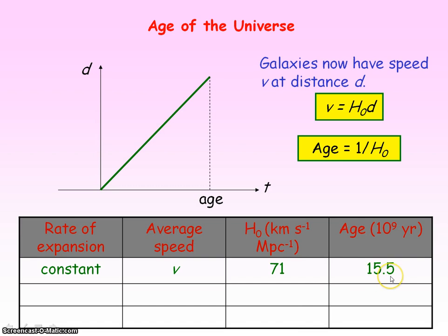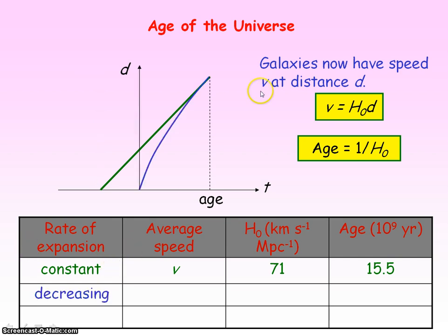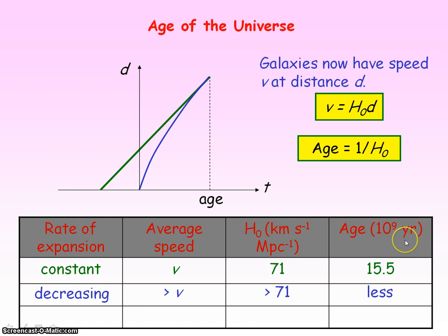It's important to note that this age of the universe is an approximation, because we've assumed a constant rate of expansion. However, if the rate of expansion is decreasing — so the galaxies are decelerating to their current speed V at distance D — then their average speed will have been greater than V. The effective Hubble's constant would therefore be greater, and the calculated age of this decelerating universe would be less, making 15.5 billion years an overestimate.